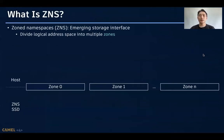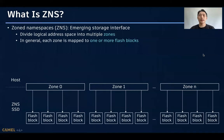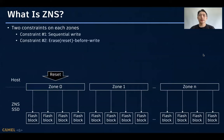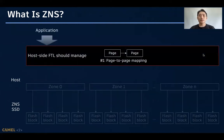ZNS is an emerging storage interface that divides logical address space into multiple zones, and each zone is typically mapped to one or more flash blocks. In the ZNS interface, there exist two constraints on each zone. First, we must write the data in a sequential manner. And second, we need to reset the zone before modifying it, just like a flash block.